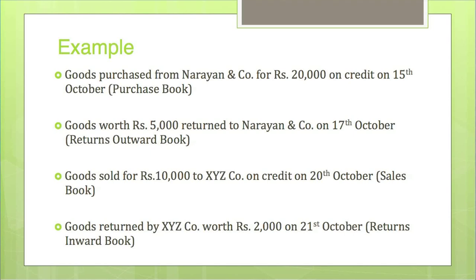For the third transaction, we include the date — 20th October — the details, company name XYZ Company, and the amount Rs. 10,000. This is recorded in the Sales Book, the book for recording credit sales entries. Fourth: goods returned by XYZ Company worth Rs. 2,000 on 21st October. This is a return transaction related to goods sold on credit, so it will be recorded in the Returns Inward Book and not any other book.